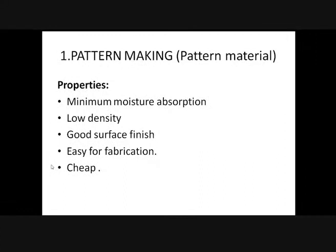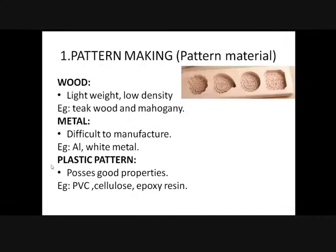First one is wood — wood is lightweight with low density. All the properties required for a pattern material are present in wood except moisture absorption. So whichever wood has low moisture absorption can be taken as pattern material. Example: teakwood and mahogany.